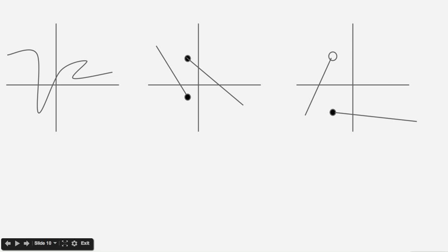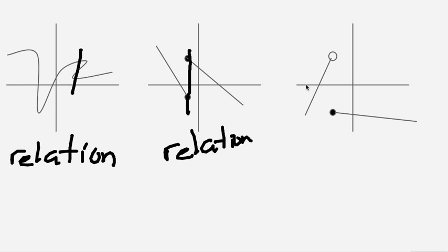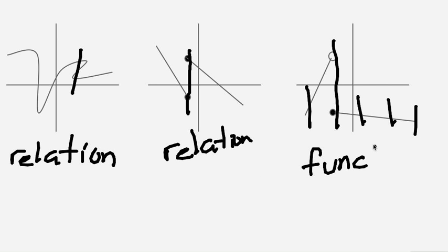Let's practice with the vertical line test. In the first example, if you draw a vertical line it crosses three points, so it's not a function — it's a relation. In the second example, a vertical line crosses two points, so that is also a relation. In the last example, no matter where you draw the vertical line, it only passes through one point, so that last example is a function. Remember from inequalities: a closed circle means there is a point there, and an open circle means there is no point — the open circle on this last example helps confirm it's a function.